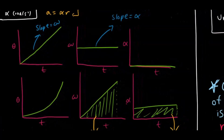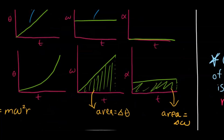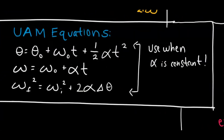Motion graphs for angular kinematics are very similar to linear kinematics. You have position over time, angular velocity over time, and angular acceleration over time. The slope of each graph corresponds to the next quantity: the slope of angular position over time is angular velocity, and the slope of angular velocity over time is angular acceleration. The area under the angular acceleration graph gives the change in angular velocity, and the area under the angular velocity graph gives the change in angular position.